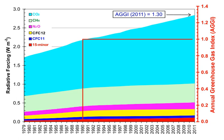The atmospheric lifetime of a species therefore measures the time required to restore equilibrium following a sudden increase or decrease in its concentration in the atmosphere. Individual atoms or molecules may be lost or deposited to sinks such as the soil, the oceans and other waters, or vegetation and other biological systems, reducing the excess to background concentrations. The average time taken to achieve this is the mean lifetime. Carbon dioxide has a variable atmospheric lifetime and cannot be specified precisely. The atmospheric lifetime of CO2 is estimated on the order of 30 to 95 years.